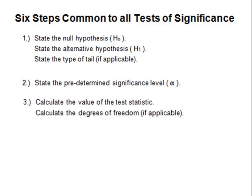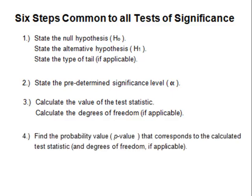Number three: calculate the value of the test statistic. This will come from the data from the sample. If we are computing population mean, calculate the degrees of freedom. Number four: find the probability value, called the p-value, that corresponds to the calculated test statistic. The p-value can be found by using software, the calculator, or by using a table.